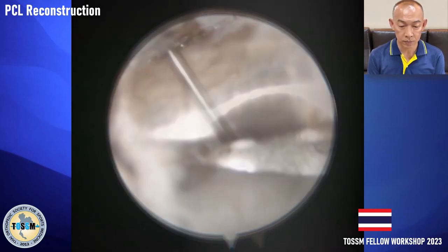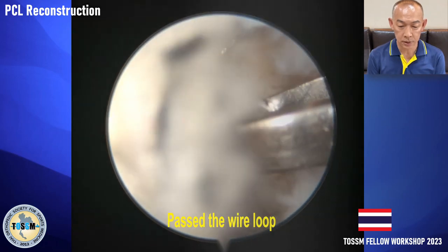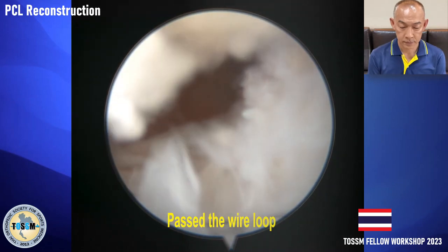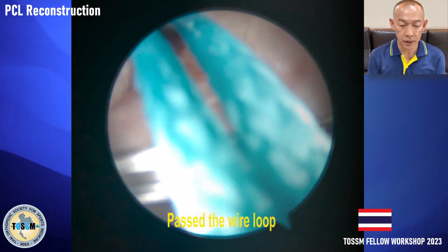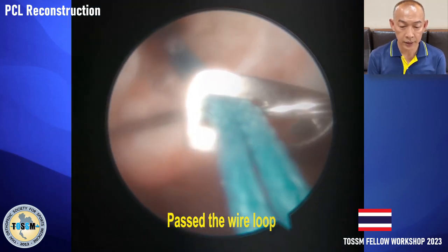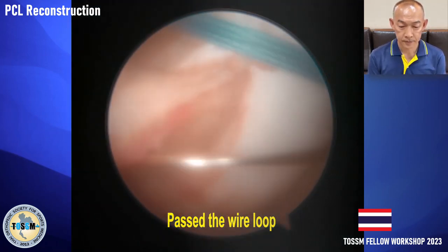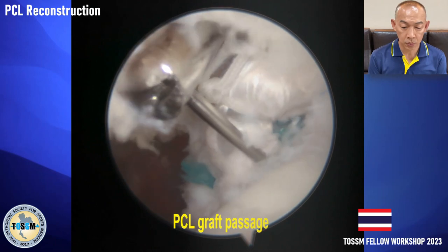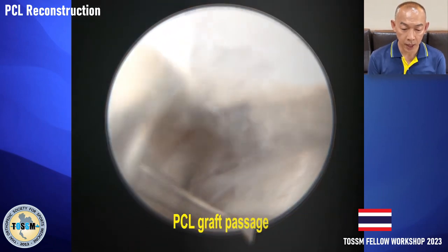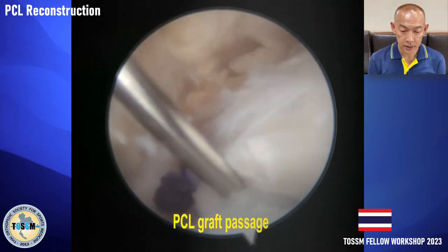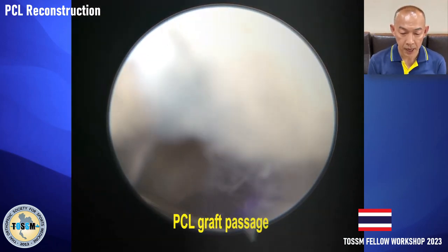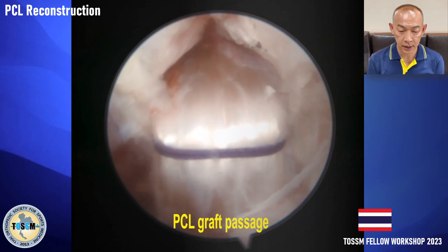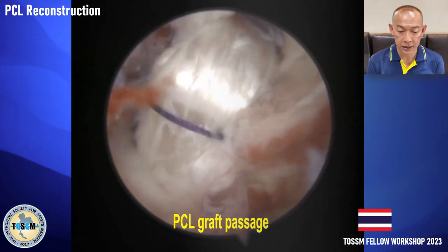We insert the Y-loop and pass it anteriorly between the intercruciate ligaments, then pass the suture from the femoral tunnel to the anterior portal. We pass the graft from between the intercruciate ligaments posteriorly into the tibial tunnel using the guide wire. After that, we pass the outer end of the graft into the femoral tunnel. You can see the PCL graft and the PCL remnant.